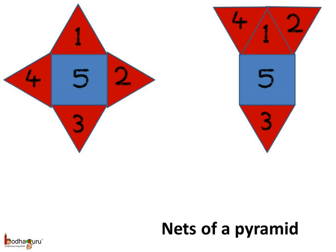In this net, the 2 and 4 numbered faces are attached to face 1, not to face number 5 as we saw in the first case.